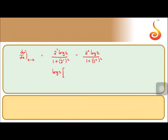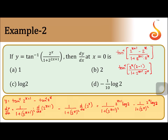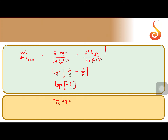Finally, log 2 is common, so what we get is 2 by 5 minus 1 by 2, which gives minus 1 by 10. This can be written as minus 1 by 10 log 2. So option d is correct: minus 1 by 10 log 2. The very important formula used here is: tan inverse a minus tan inverse b equals tan inverse of a minus b by 1 plus ab. When these types of problems are given, we always try to bring them in the form of tan inverse a minus tan inverse b.